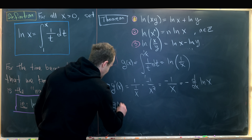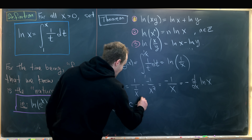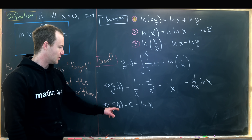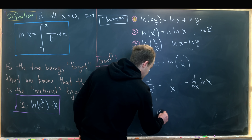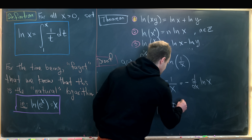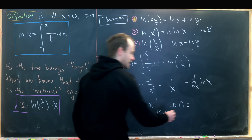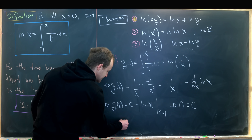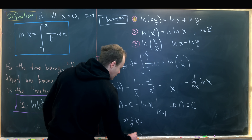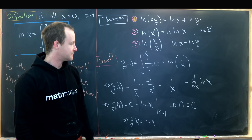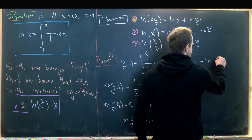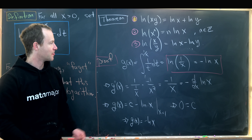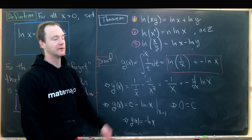Since g′(x) = −1/x equals the negative of the derivative of ln(x), g(x) differs from −ln(x) by a constant: g(x) = C − ln(x). Evaluating at x = 1: g(1) = 0 by the integral definition, and C − ln(1) = C − 0 = C. So C = 0, meaning g(x) = −ln(x). Therefore ln(1/x) = −ln(x).